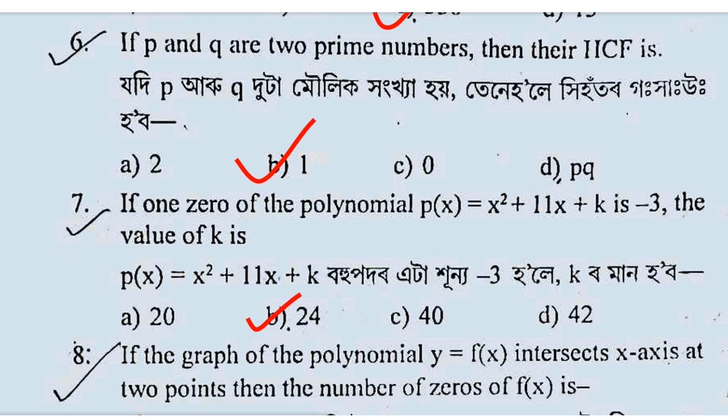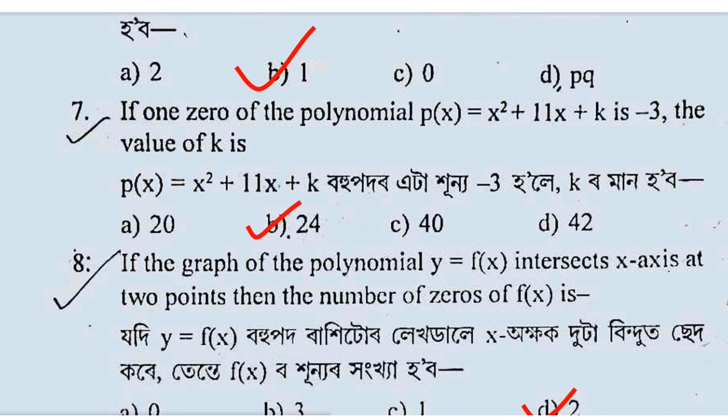P(x) equals x square plus 11x plus k minus 3. This is 2. This is 24. So, this is 4.